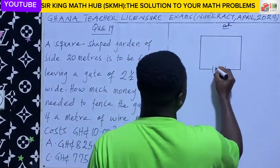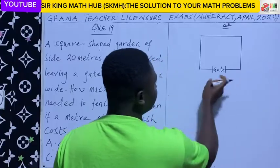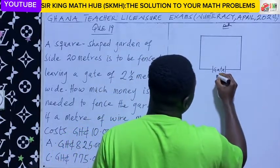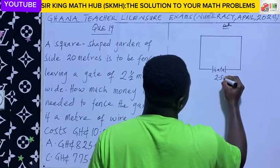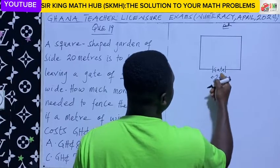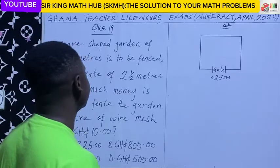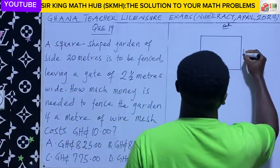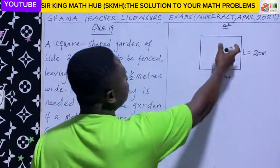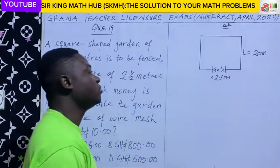So this is our square-shaped garden, and this is our gate. We are told that the width of the gate measures 2.5 meters. We were told that each side of the square-shaped garden measures 20 meters.